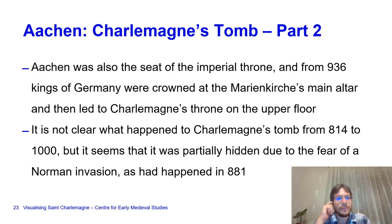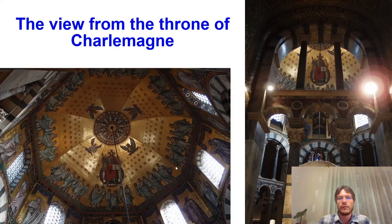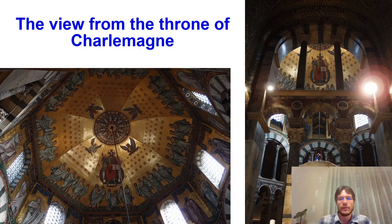Aachen was also the seat of the imperial throne, and from 936, kings of Germany were crowned at the Marienkirche's main altar and then led to Charlemagne's throne on the upper floor. This throne looks like this—there is also the later altar of Saint Nicasius. From the throne, one could view the mosaics and have the best view of the interior.